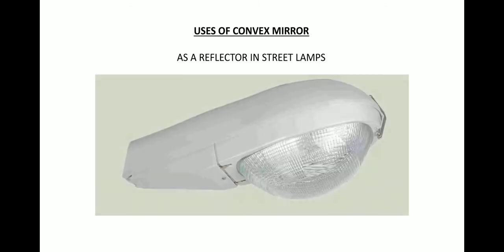Next we have the uses of convex mirror. It is used as a reflector in street lamps. As here we can see this is a concave shaped reflector so the light which is emitted is scattered all over in most of the direction so that this reflector reflects the light and it covers over the larger area.